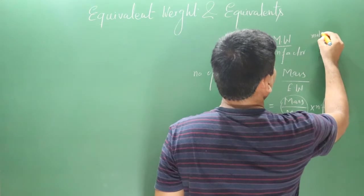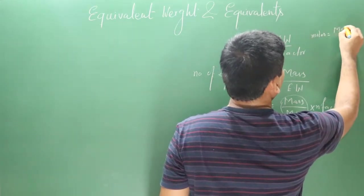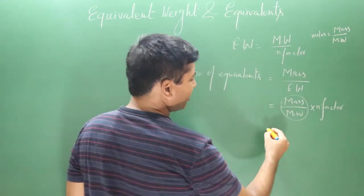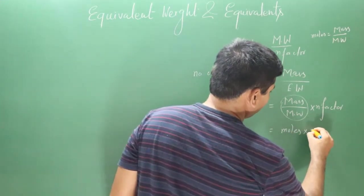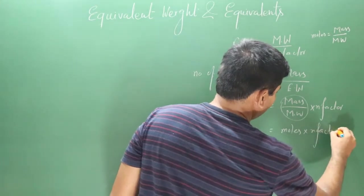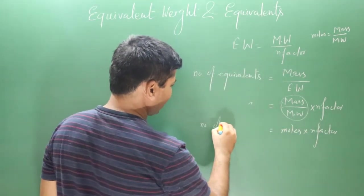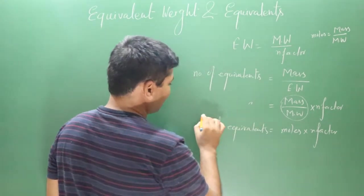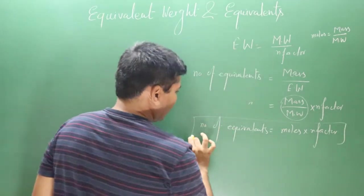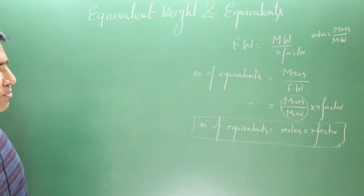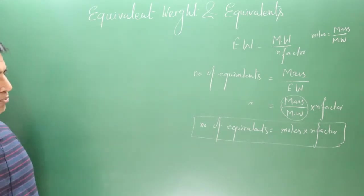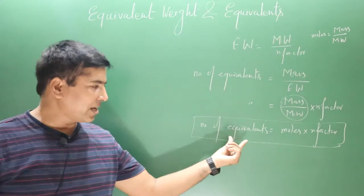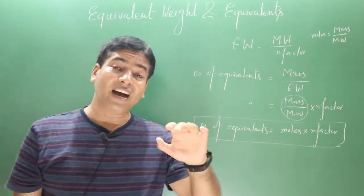Mass divided by molecular weight is always equal to moles. So in place of mass divided by molecular weight, we can plug in moles. Therefore: number of equivalents = moles multiplied by n-factor. This is a very important formula — if I multiply the moles of a substance by its n-factor, I can calculate the number of equivalents.